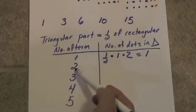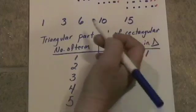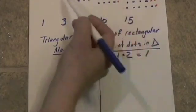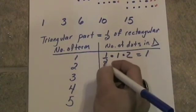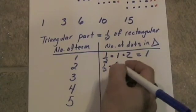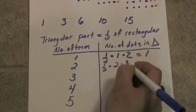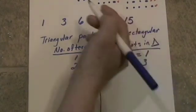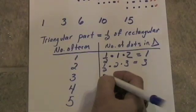Let's move to the second term. The second term, the rectangular array was two by three, and we wanted half of that, so it's half of two by three, which is half of six, which is three, and you can see there are three in like manner.